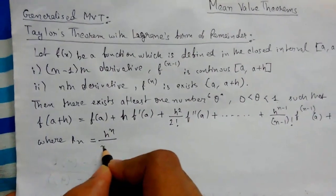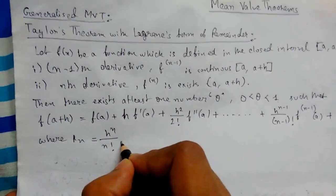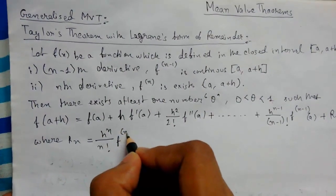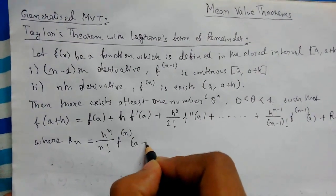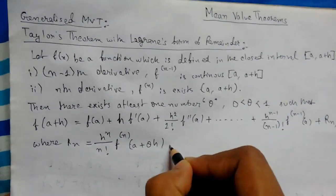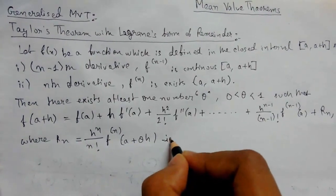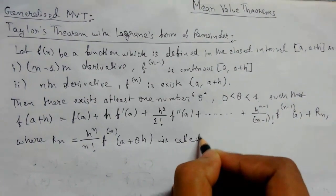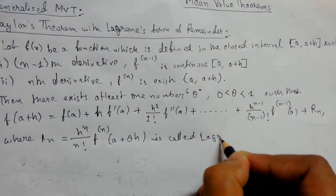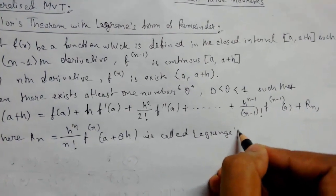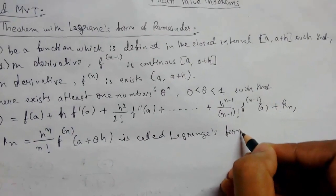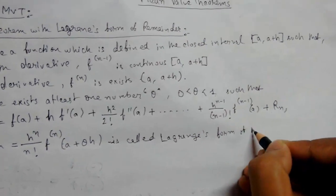Where R_n equals h^n/n! times f^(n)(a + θh). This R_n is called Lagrange's form of remainder.